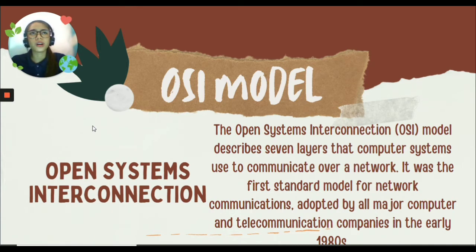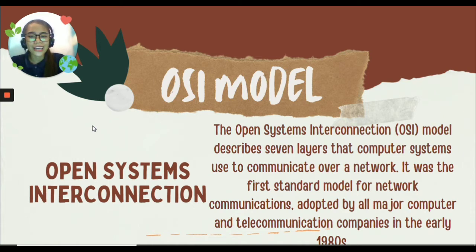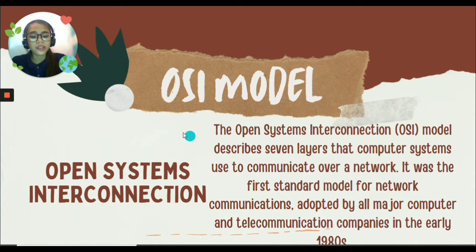But what if we connect two computers — one based on Microsoft Windows and one based on Mac OS? How can they communicate or be connected if they are not compatible? That was where OSI was introduced. OSI describes seven layers that computer systems use to communicate over a network. It was the first standard model for network communication, adopted by all major computer and telecommunication companies in the early 1980s.